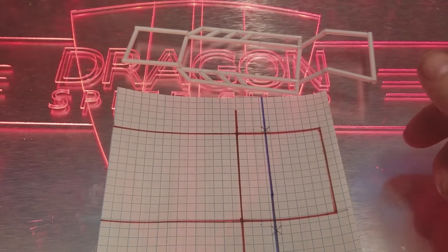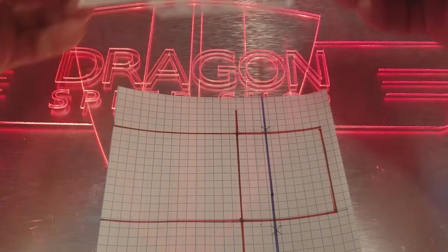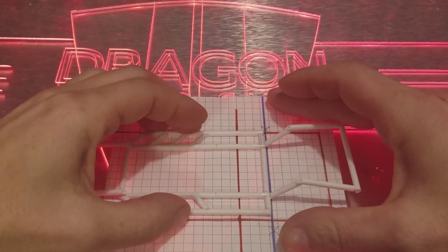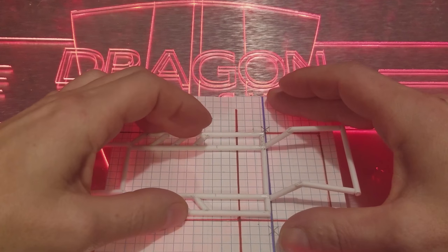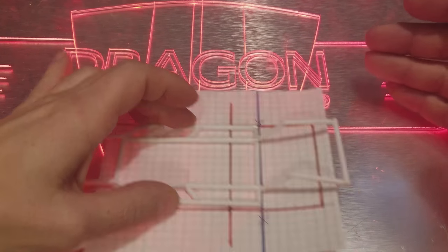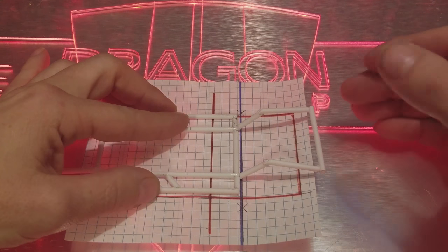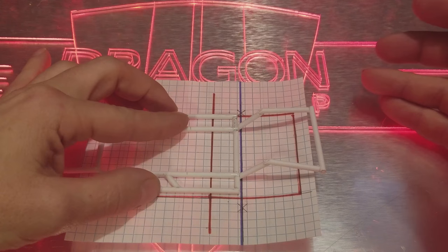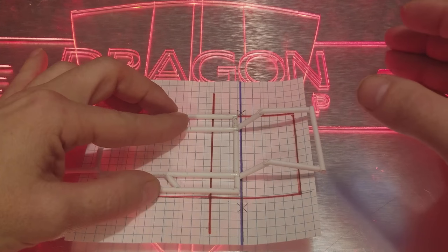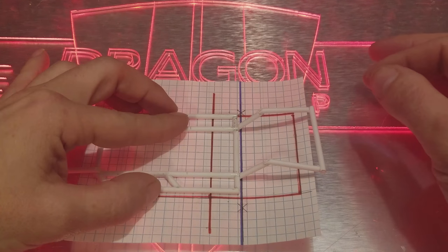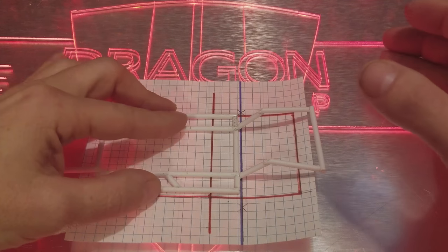The blue line here represents the center axle line, so we can keep the axle in line, everything like that. So what we can do is take our frame, get it lined up right where we need it to be. Like I said, I'm doing a pro style, pro touring style suspension.